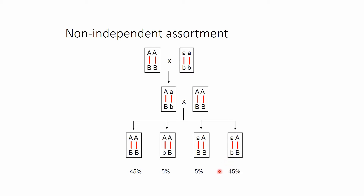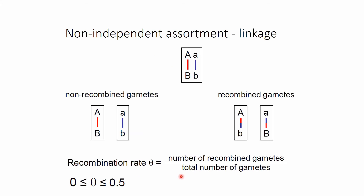So in this case 45%, in comparison to a situation where the lowercase a and the uppercase B would be together in a single individual. The reason for this is of course recombination.